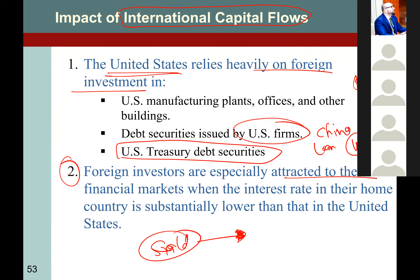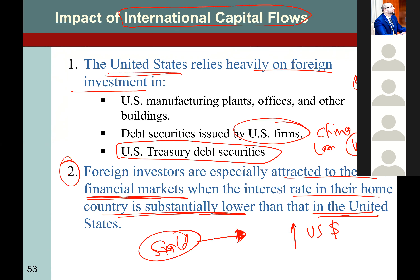Foreign investors are especially attracted to US financial markets because they offer high interest rates. So those developing countries, when they have extra money, they save it with the US. Swiss banks and UK banks provide US dollar accounts. When the interest rate in their home currency is substantially low, they save their money with the United States and earn higher returns when converting dollars back to their home currency.